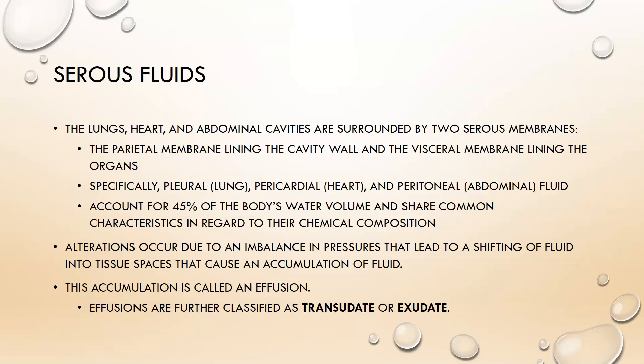The lungs, heart, and abdominal cavities are surrounded by two serous membranes. We have the parietal membrane that lines the cavity wall and the visceral membrane that lines the organs. If you apply that to each — for example, for the lung — you would have the parietal pleura and the visceral pleura. The parietal pleura would be in the thoracic cavity and the visceral pleura is on top of the lungs.